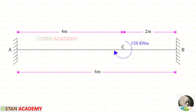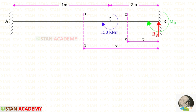In Macaulay's method we have to make sections. In this beam there are two different parts AC and CB, so we have to make two sections — one in AC and one in CB. You can see that I have made both sections at a distance of X from the point B.